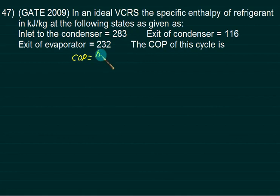This time we will directly calculate COP. COP is simply Re, which is H1 minus H4 divided by H2 minus H1. H1 is inlet to the compressor at 232. Exit of condenser is same as inlet to evaporator at 116. Inlet to condenser H2 is 283, giving COP of 2.27.